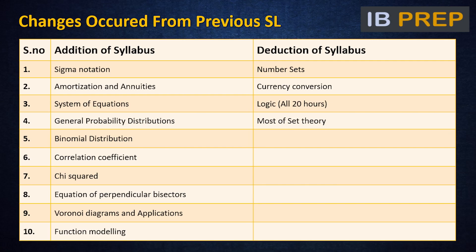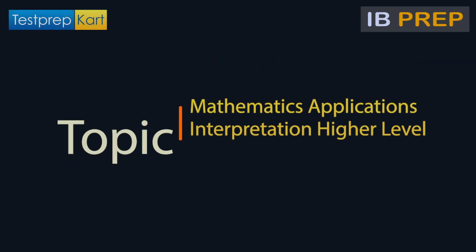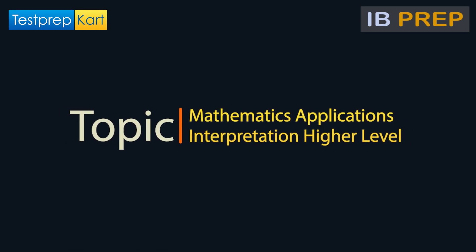In terms of syllabus changes, sigma notation, amortization and annuities, system of equations, general probability distributions, binomial distribution, correlation coefficient, chi-squared, equation of perpendicular bisectors, Voronoi diagrams and applications, and basic integration were added. Number sets, currency conversion, logic (all 20 hours), and most of set theory were deleted.